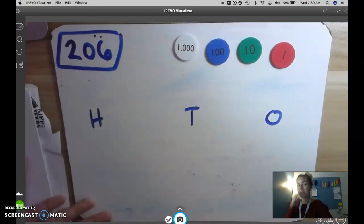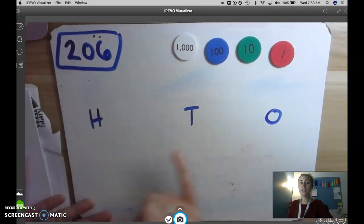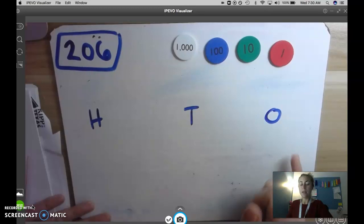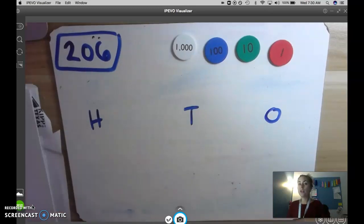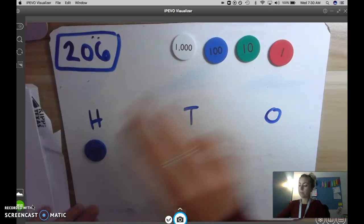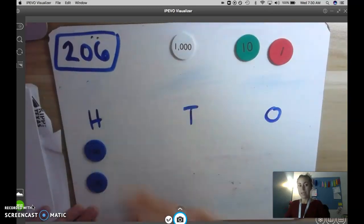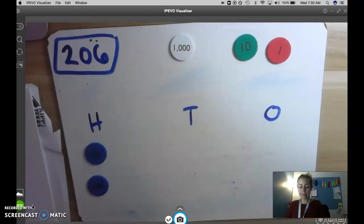So I have the number 206 here and I want to show it in hundreds, tens, and ones. So if I'm showing the number 206 I want to have two hundreds, zero tens, and six ones.